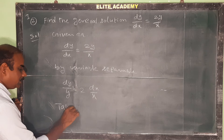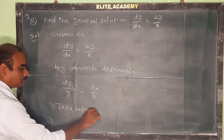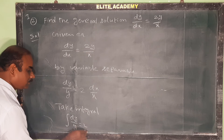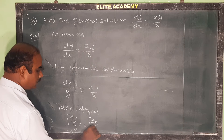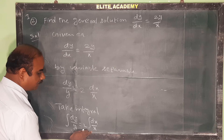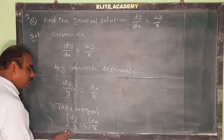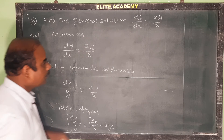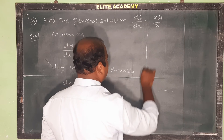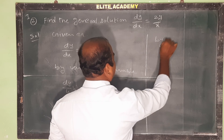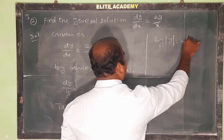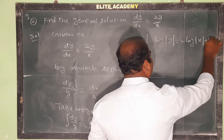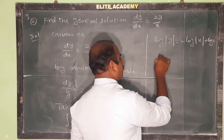Now take the integral on both sides: integral dy/y = 2 times integral dx/x. Using the formula, integral dy/y = log|y|, so we get log|y| = 2 into log|x| plus log c.